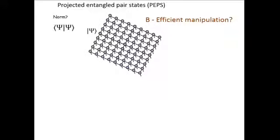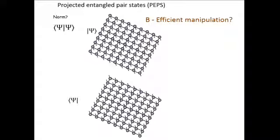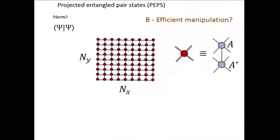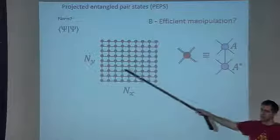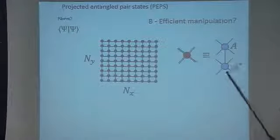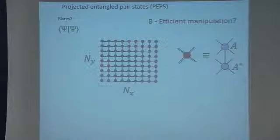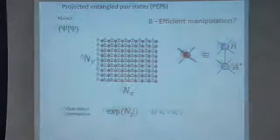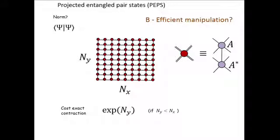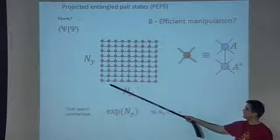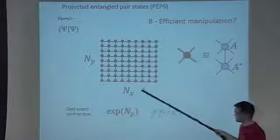What about efficient manipulation? Let's compute the norm of a PEPS. When we contract all indices, the net result is something that looks like a square lattice of tensors where each tensor corresponds to having contracted A and A-star from the bra and ket. Each index here is a double index compared to the original tensor network. If we want to compute this scalar product we have to contract this tensor network, but there is no efficient way of doing that. The cost of contracting a two-dimensional tensor network, with no other tricks available, is exponential in the linear system size.